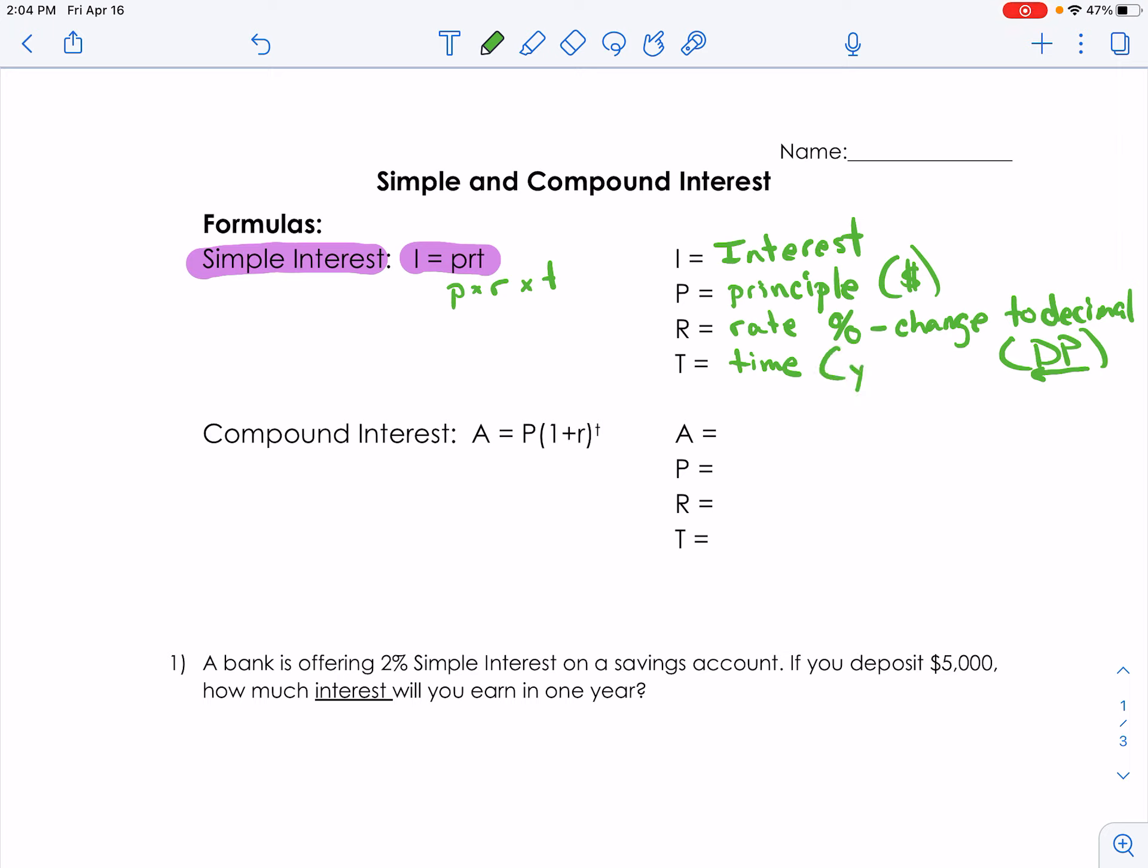And we express our time in years. So that's our simple interest formula. We would multiply the money times the rate as a decimal times the years, and that will tell us how much interest we're going to make.